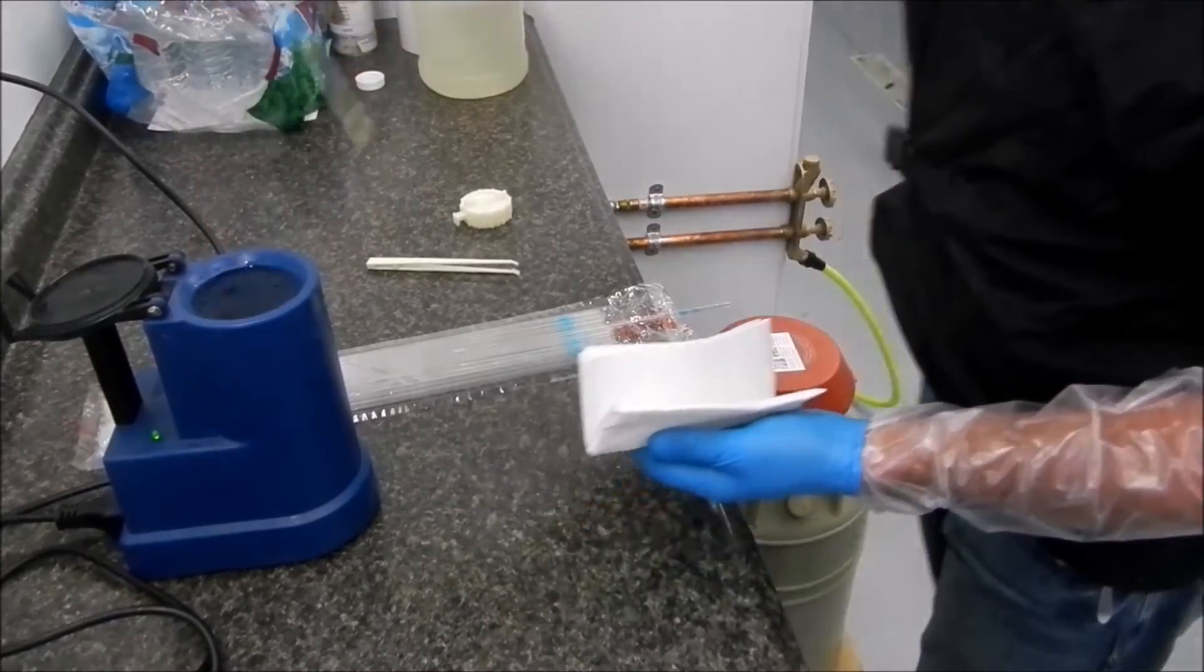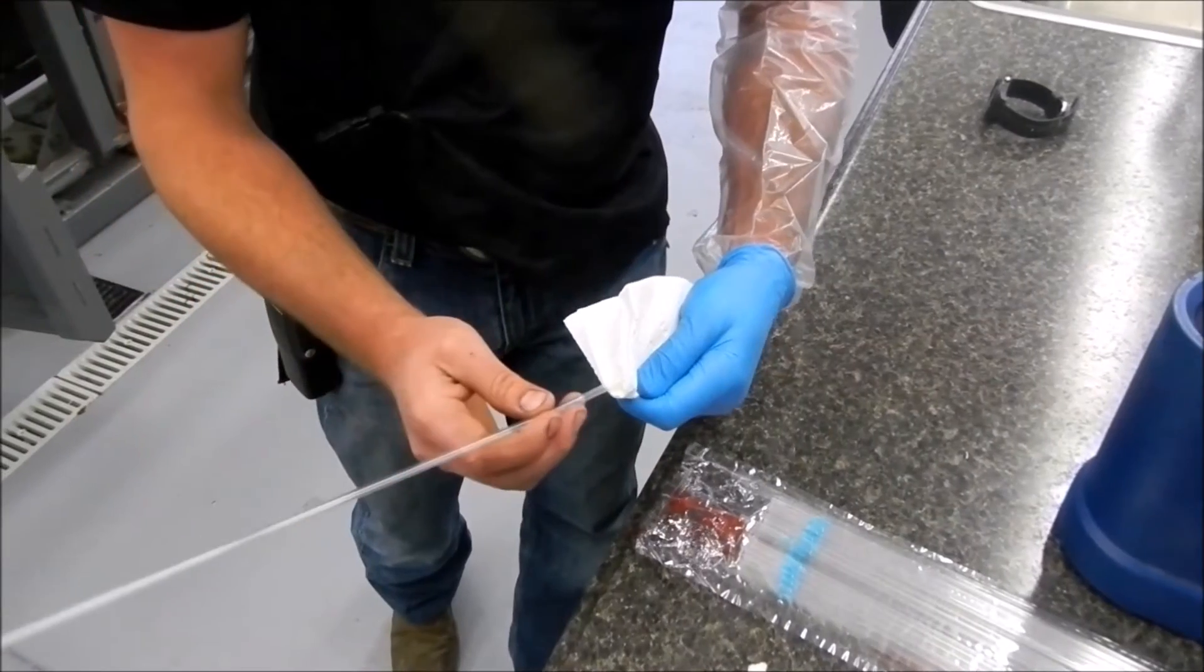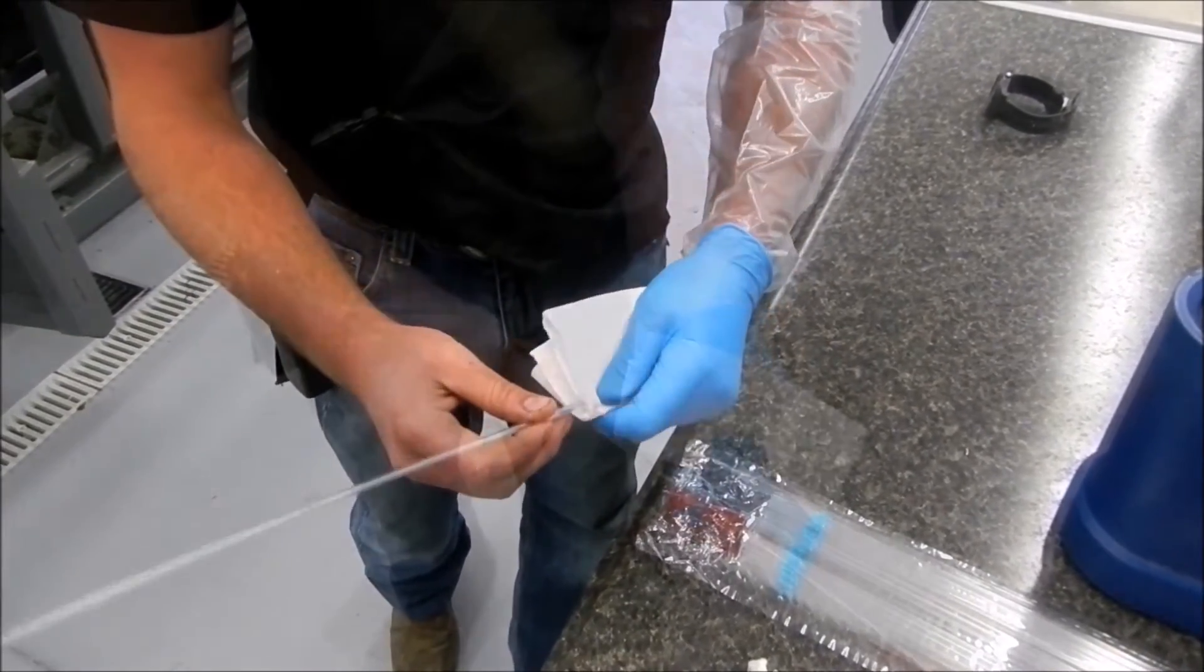We then remove the semen from the water bath where we dry it off with a paper towel, insert it into the insemination gun, and move quickly to the cow.